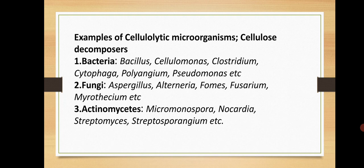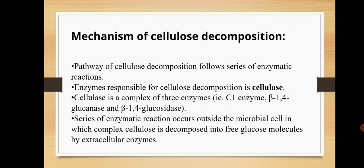Cellulose is a long linear chain of glucose subunits linked by beta-1,4 glycosidic bond. We want to break this cellulose — degrade this chain into single glucose units — that is the degradation process. Fungi involved are Aspergillus, Alternaria, Fomes, Fusarium, Myrothecium. Actinomycetes include Micromonospora, Nocardia, Streptomyces, Streptosporangium, etc. These are the different bacteria, fungi, and actinomycetes involved in the degradation of cellulose.